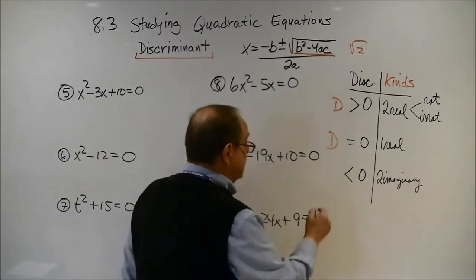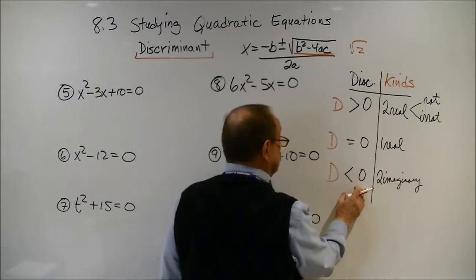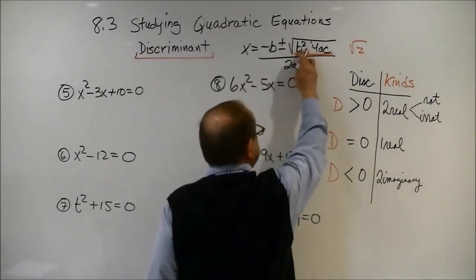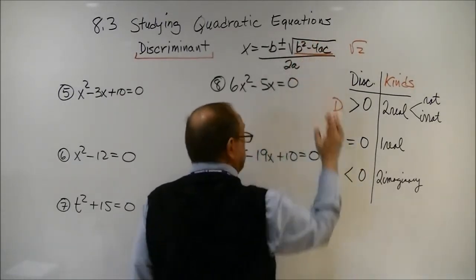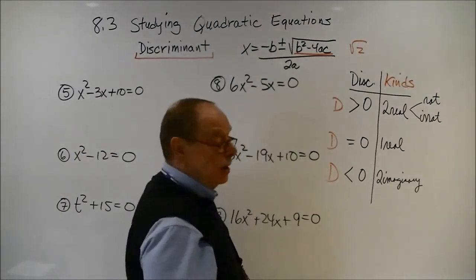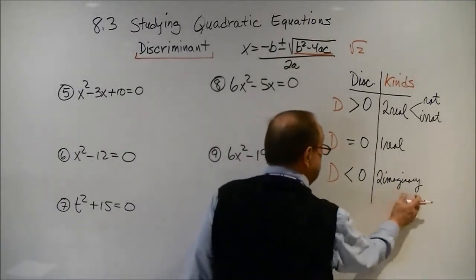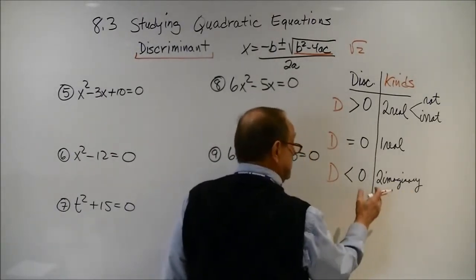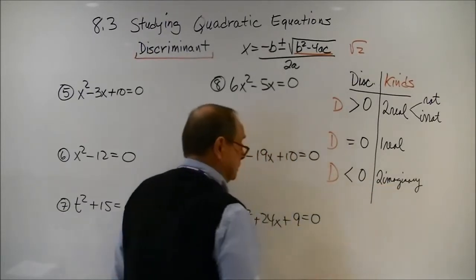Now, how about if your discriminant is less than zero? That is, you have a negative under the radical sign. Well, then these are imaginary numbers. You're going to get two imaginary solutions.